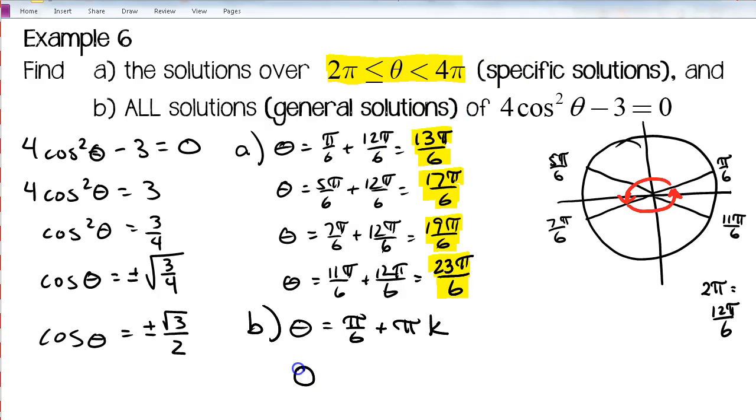And then I would do another equation for 5π over 6 and 11π over 6, since those are 180 degrees or π apart. 5π over 6 plus π k. And there you have your general solutions to this equation.